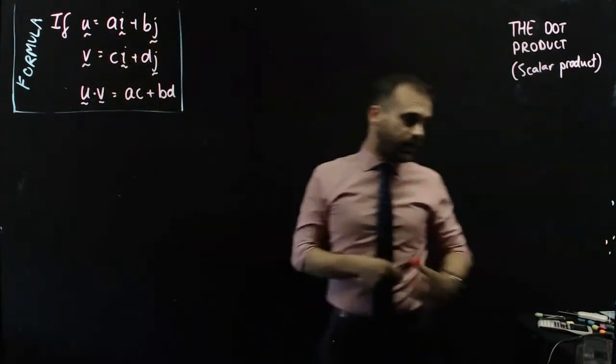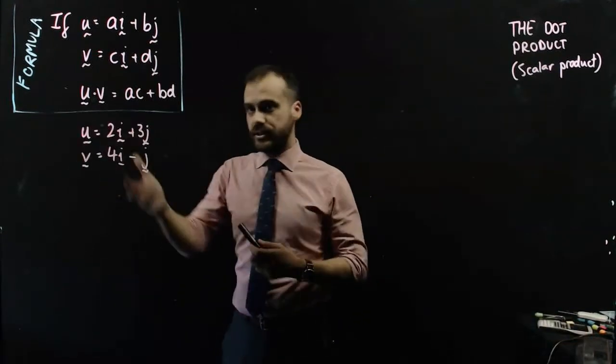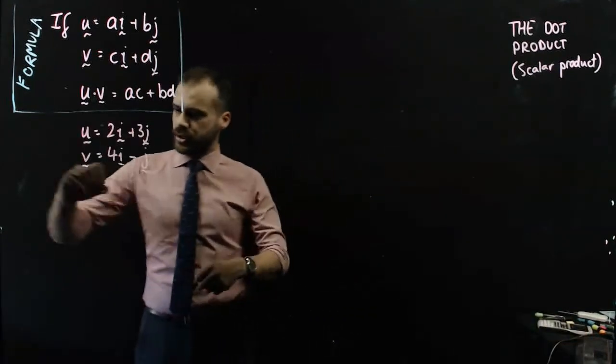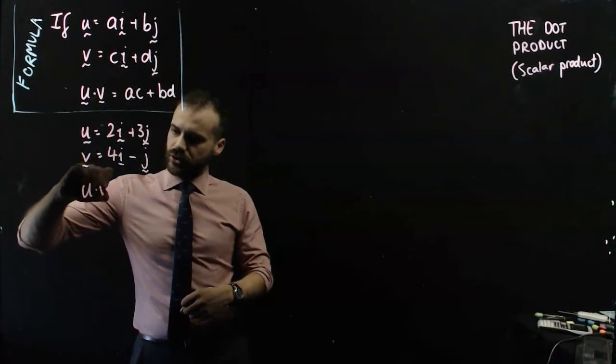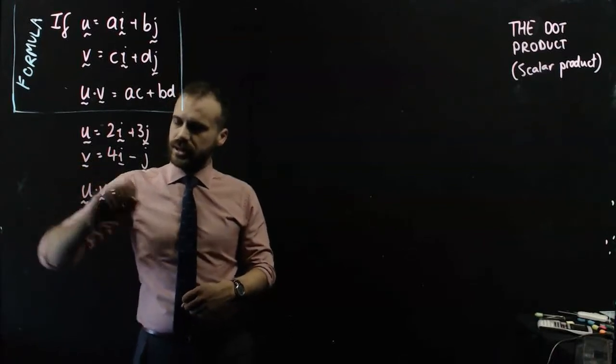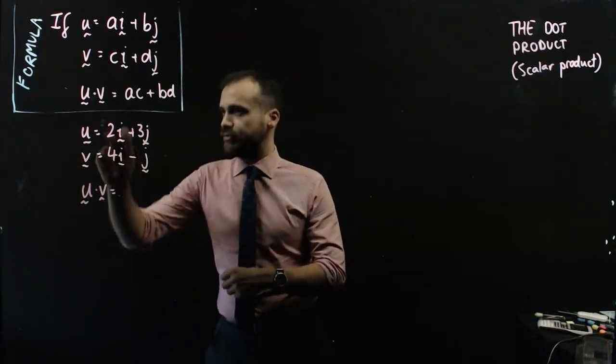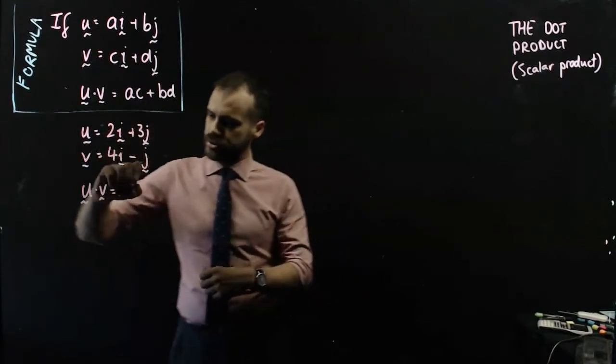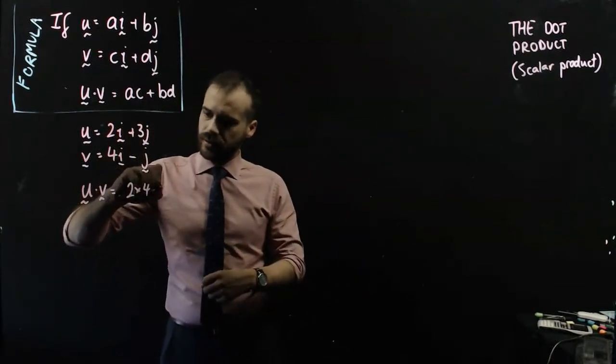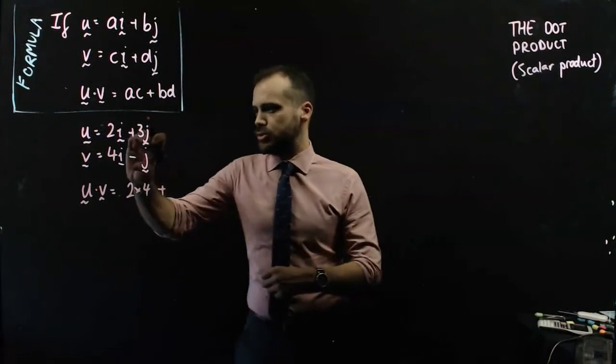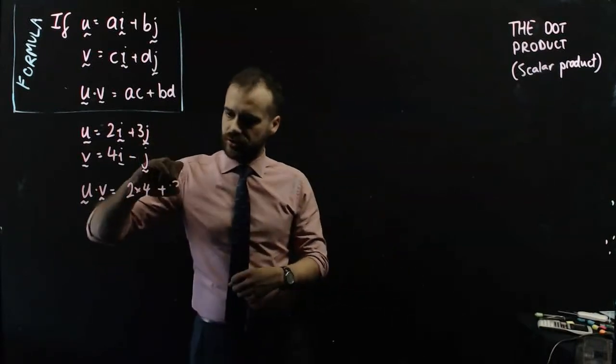Let's just do it on a vector real quick. So here are our two vectors and I'm going to find the dot product. So we can now say that u dot v is equal to 2 times 4, the two i components, plus the two j components.